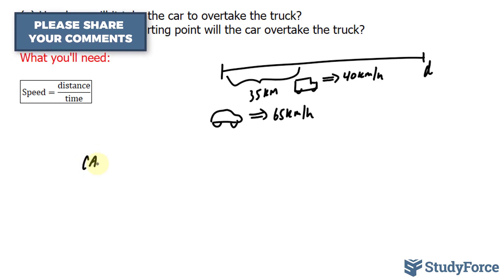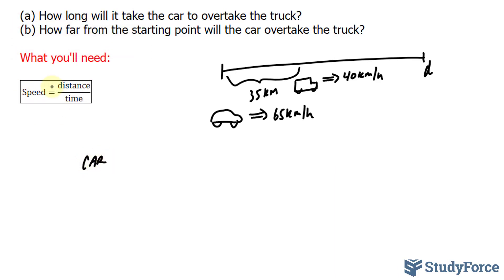The car will have a formula that models the speed formula, where speed is equal to distance over time. The car is traveling 65 kilometers an hour, and there's no need to write down the units, is equal to the distance D, which we don't know, over time, which we also don't know.